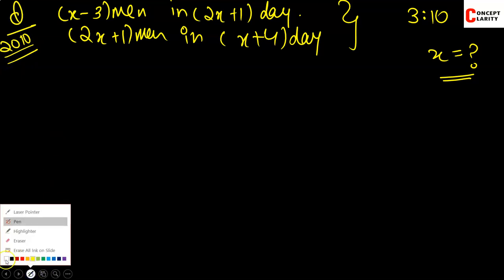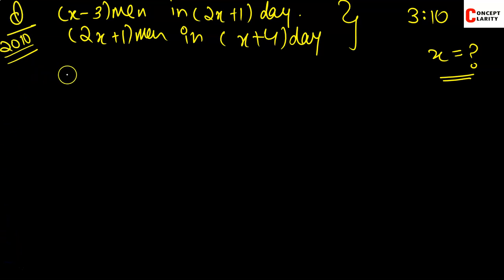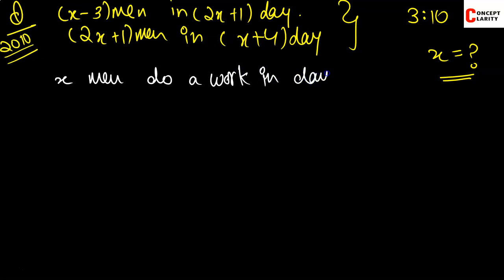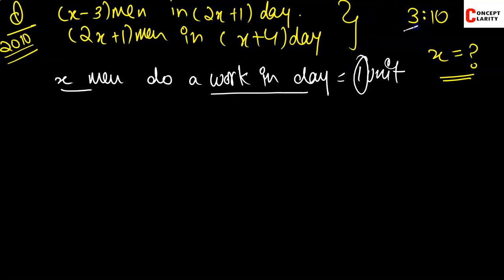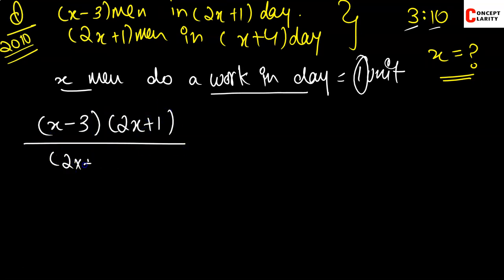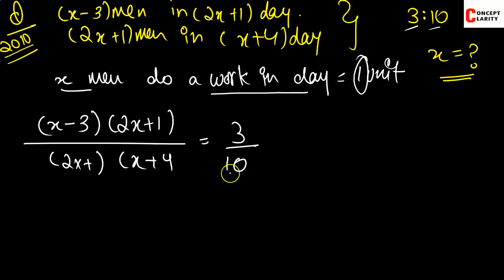So this is very easy. Let's write the setup: (x−3) men do a work in days gives one unit of production. What we have to do is set up (x−3) times the number of days upon (2x+1) into (x+4) days, and the work ratio is 3 to 10. Now we cross-multiply to find the value of x.